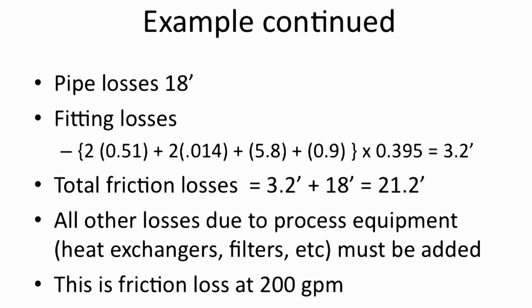Using loss coefficients, the minor losses are 3.2 feet, which is added to the pipe loss to determine the total friction loss. And of course, any process equipment losses have to be added to these.